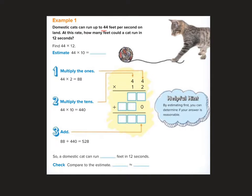So first let's find our estimate. 44 times 10, which means I just write 44 and add a zero. So it should be close to 440 feet. Don't forget your label.